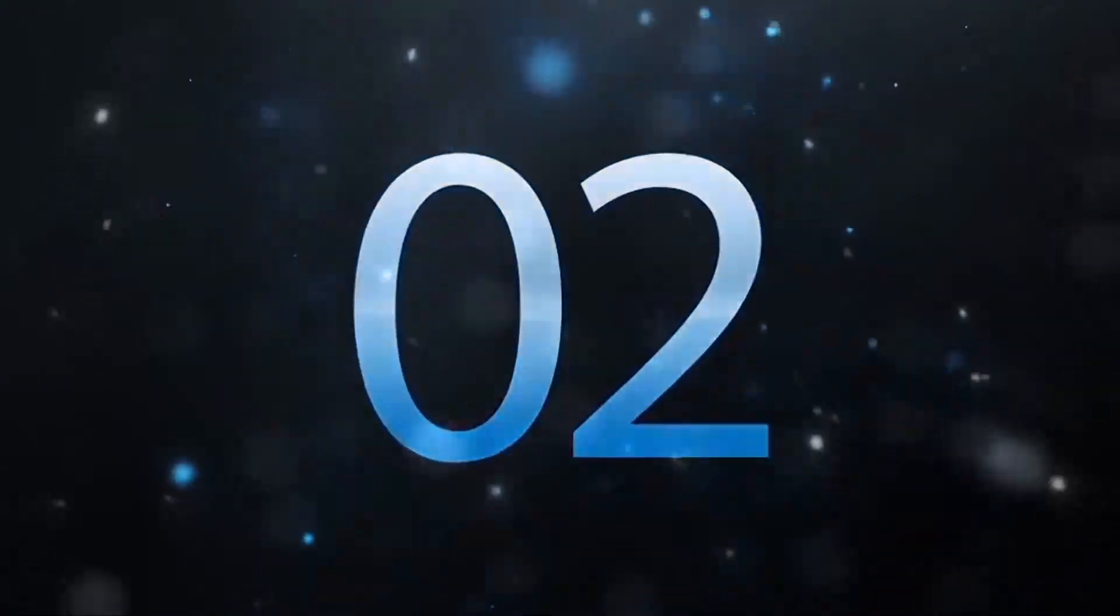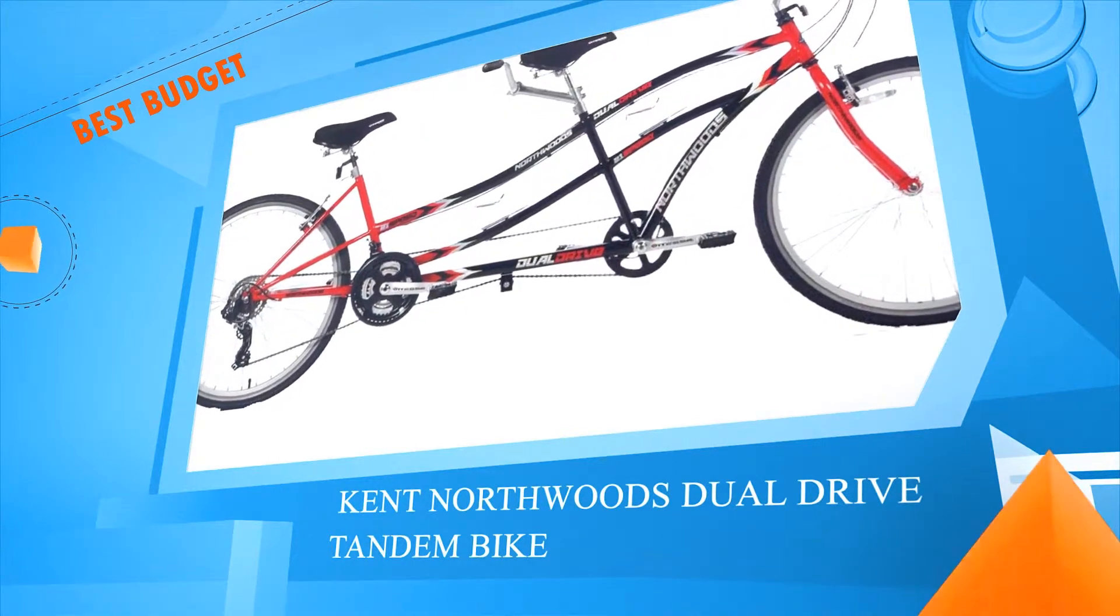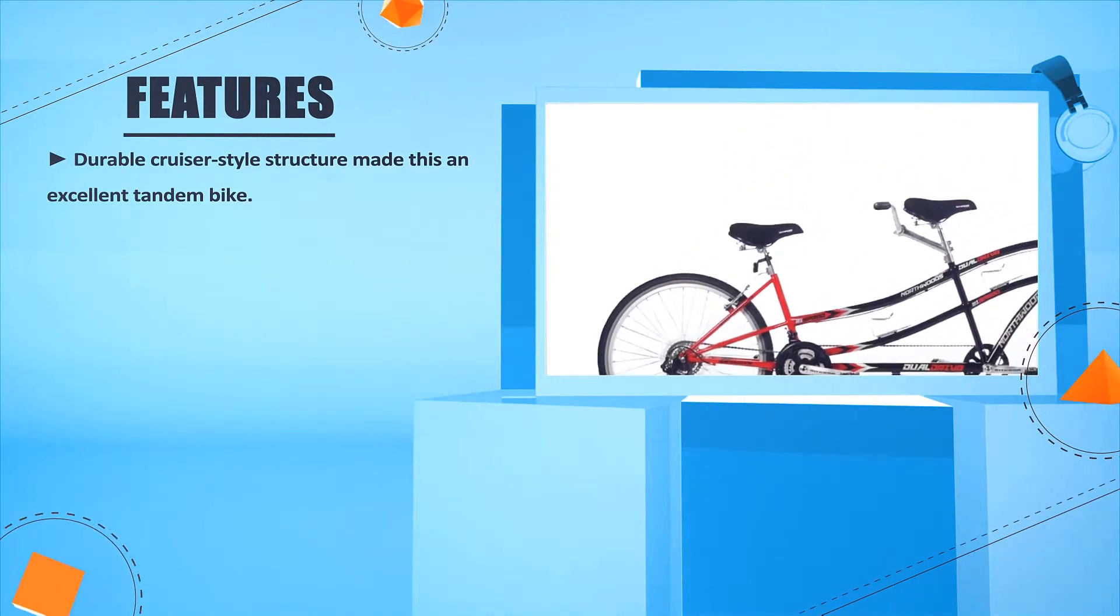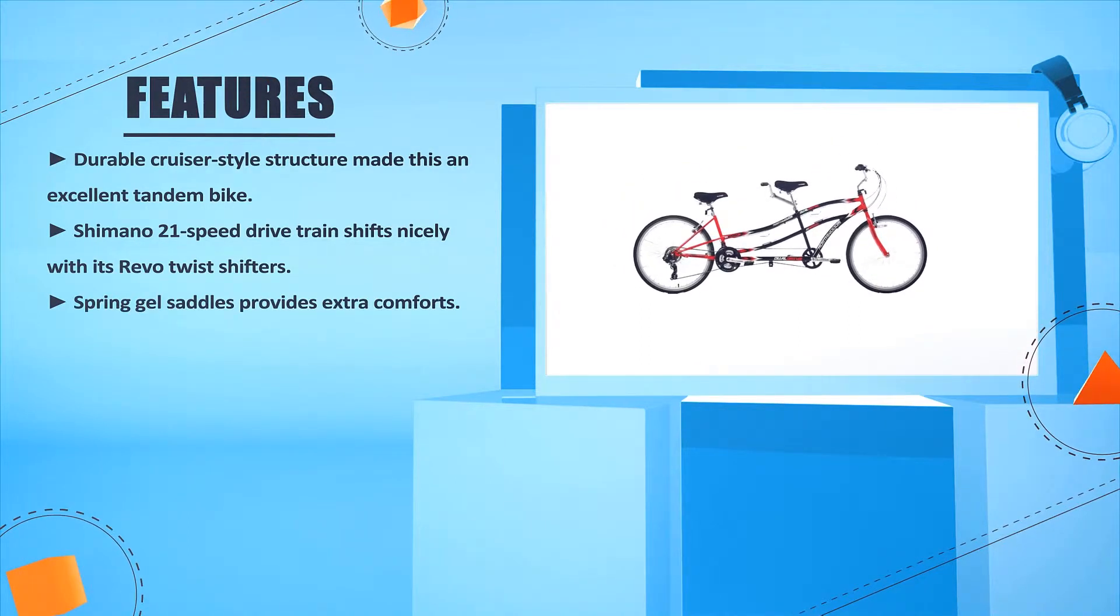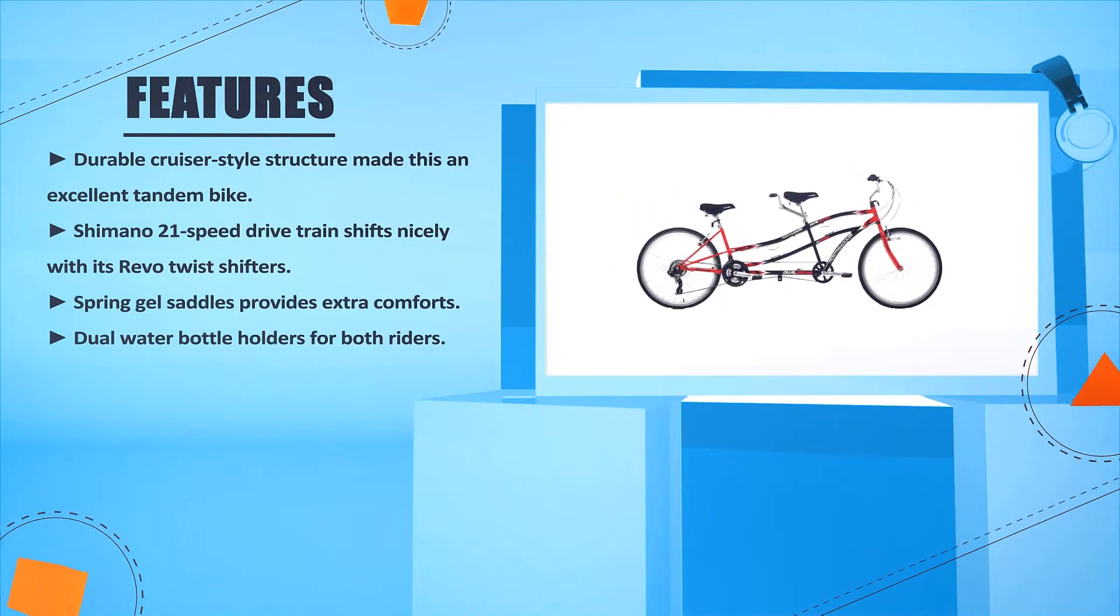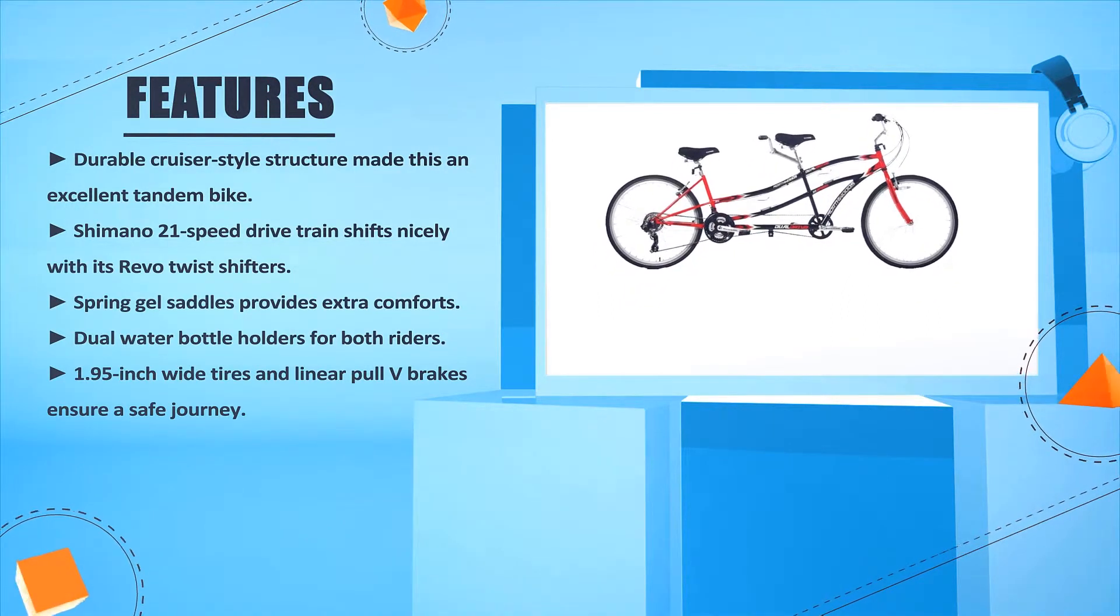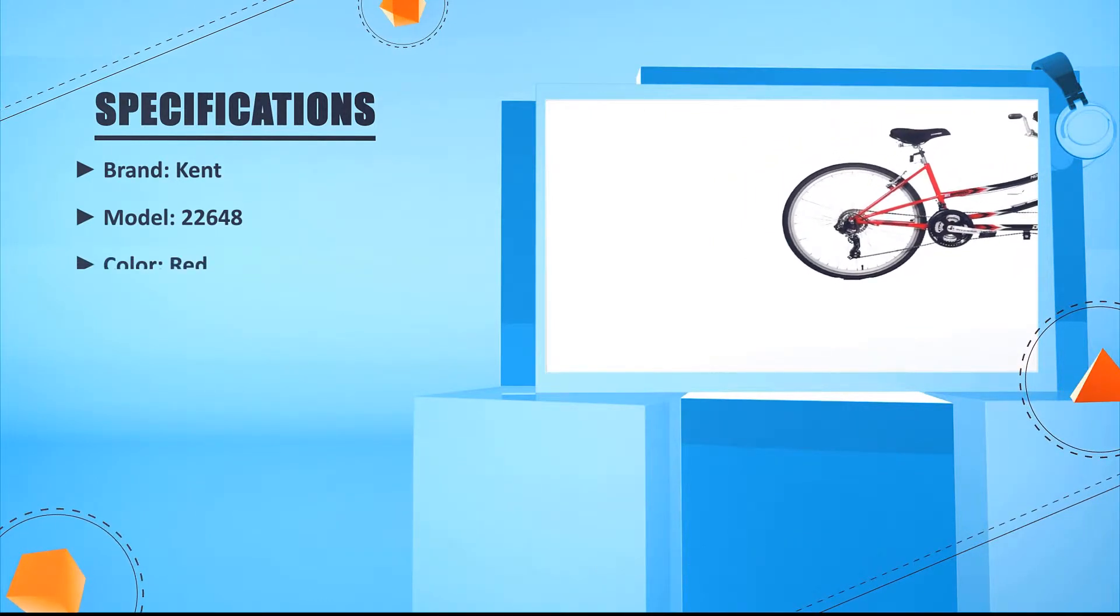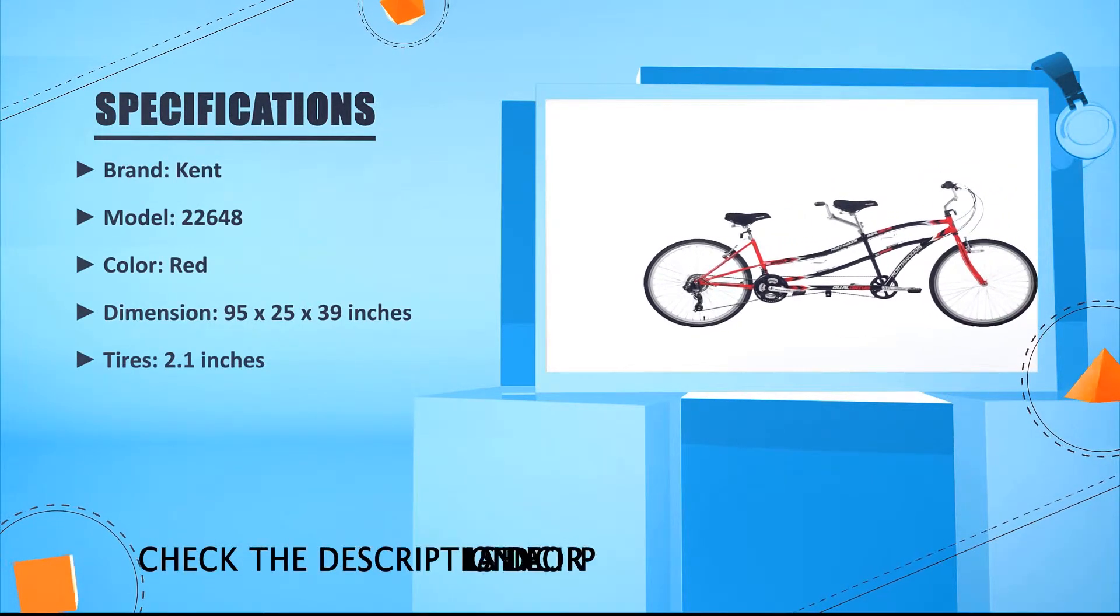Number two: Kent Northwoods Dual Drive Tandem Bike. Kent Northwoods Dual Cruiser durable cruiser-style structure made this an excellent tandem bike. Shimano 21-speed drivetrain shifts nicely with its Revo twist shifters. Spring gel saddles provide extra comfort. Dual water bottle holders for both riders. 1.95 inches wide tires and linear pull V-brakes ensure a safe journey. Brand: Kent, Model: 22648, Color: Red, Dimension: 95 x 225 x 239 inches, Tires: 2.1 inches.